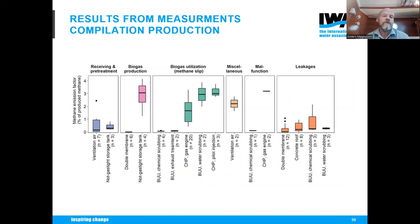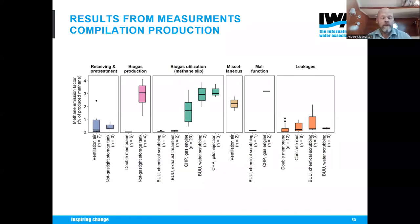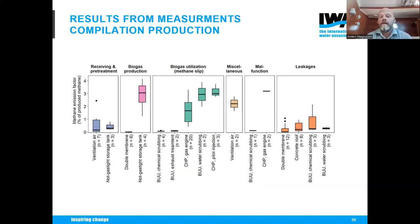This compilation of results shows the biggest emissions from non-gas-type storage tanks in post-treatment, as previously discussed. There are also significant emissions from water scrubbing — a known issue historically — and from CHP units when producing electricity from gas. BUU stands for gas upgrading and CHP stands for electricity-producing units. Leakages can be quite high in certain areas, often where upgrading units with higher pressures are involved.